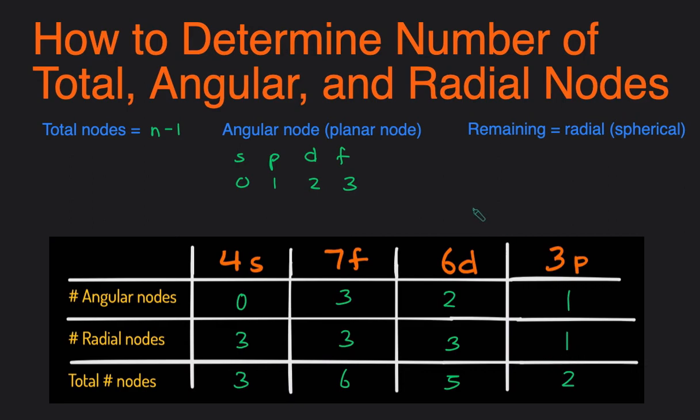Let's just take a look at one last example. Let's say we're looking at 9S. The total would be 9 minus 1, 8. The number of angular nodes, S has 0 angular nodes, so that means all 8 of those nodes are radial nodes.